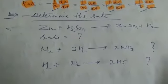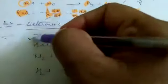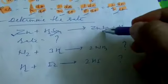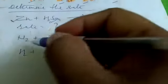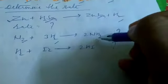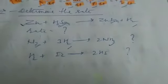Now, determine the rate for these reactions: Zn + H2SO4, ZnSO4 + H2, and N2 + 3H2 equal to 2NH3.